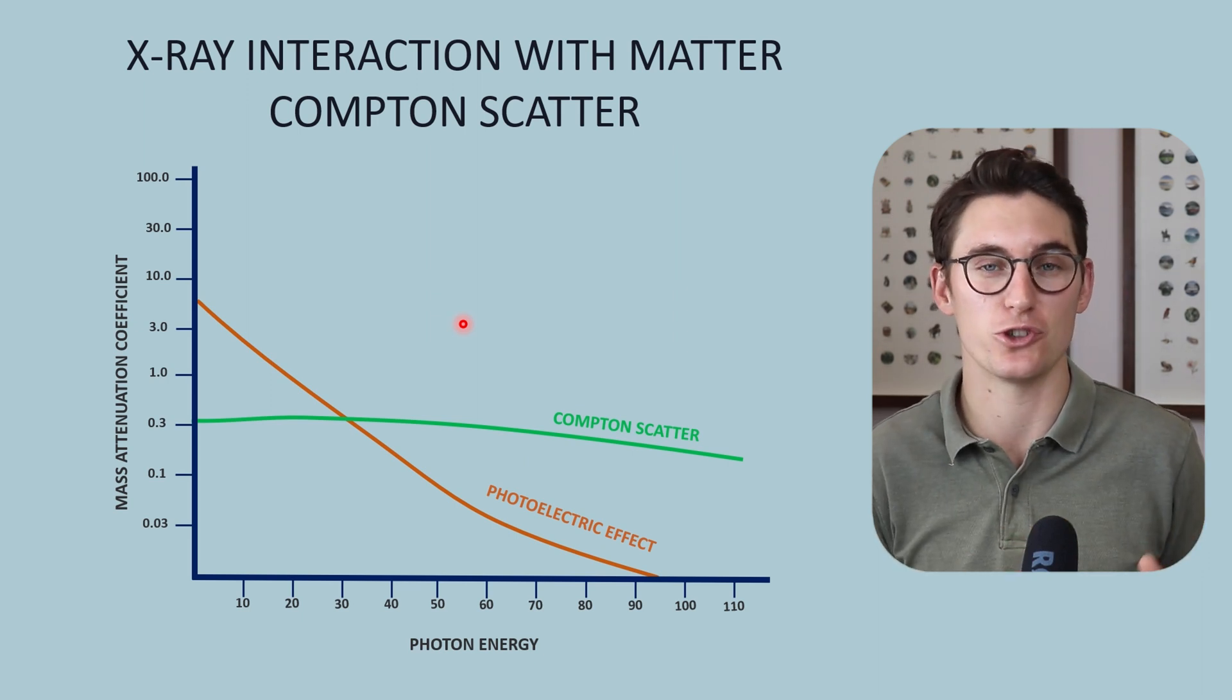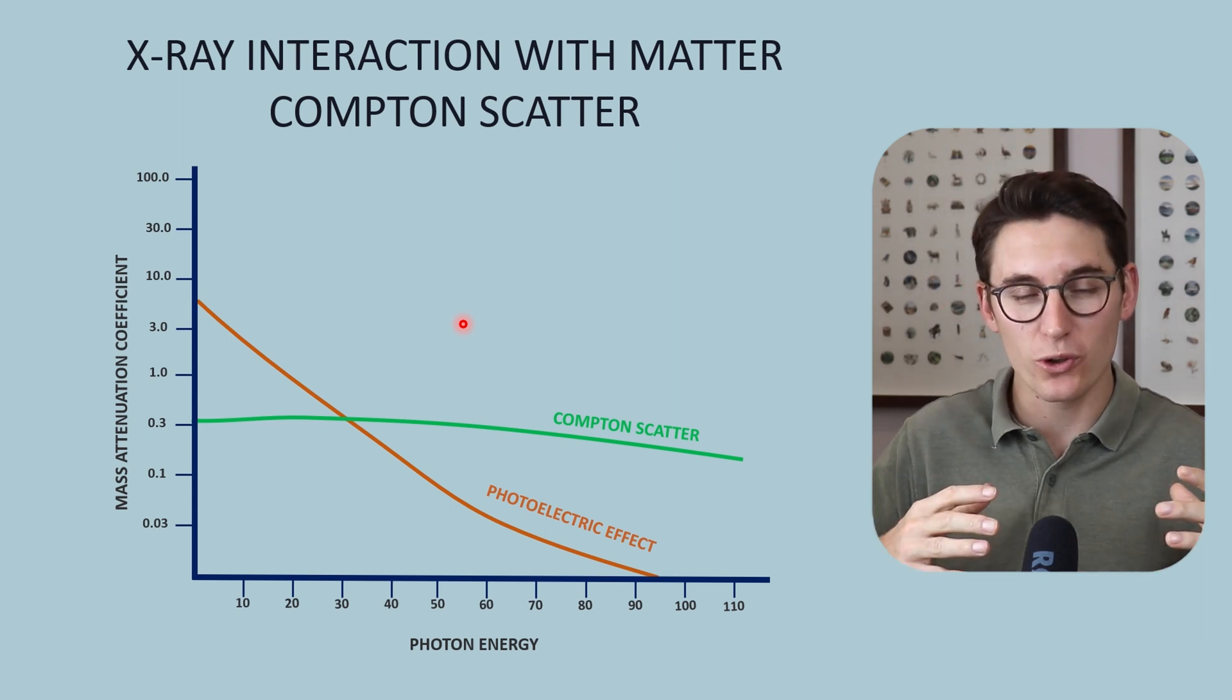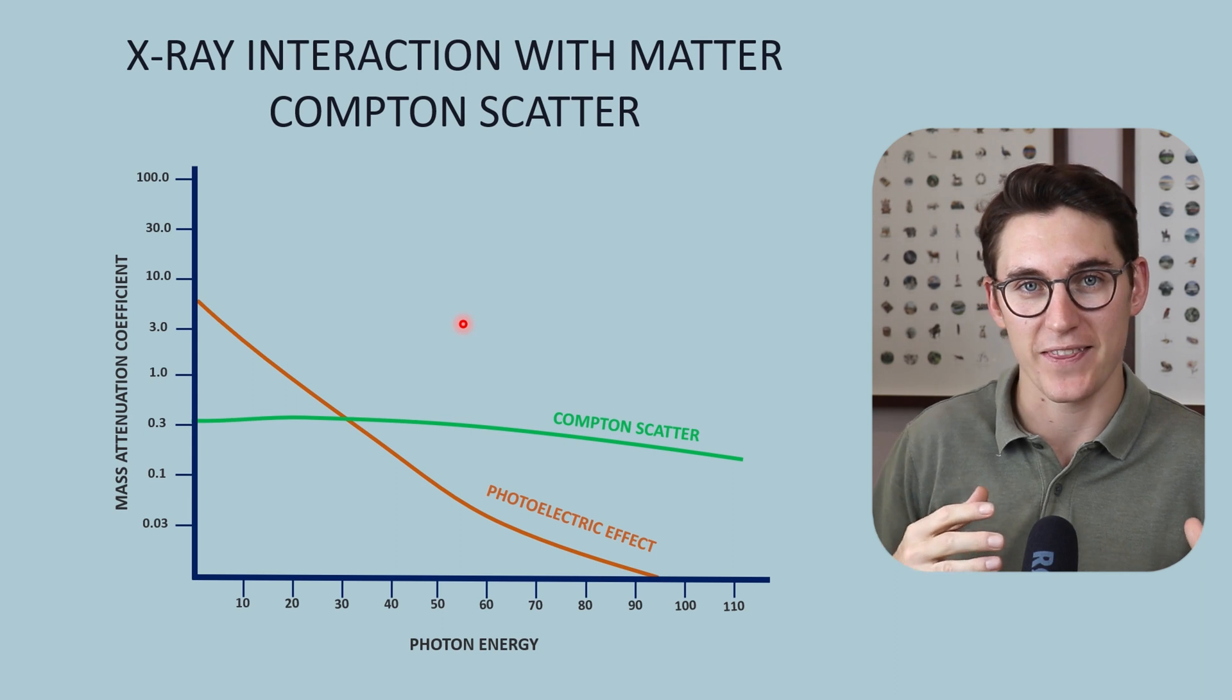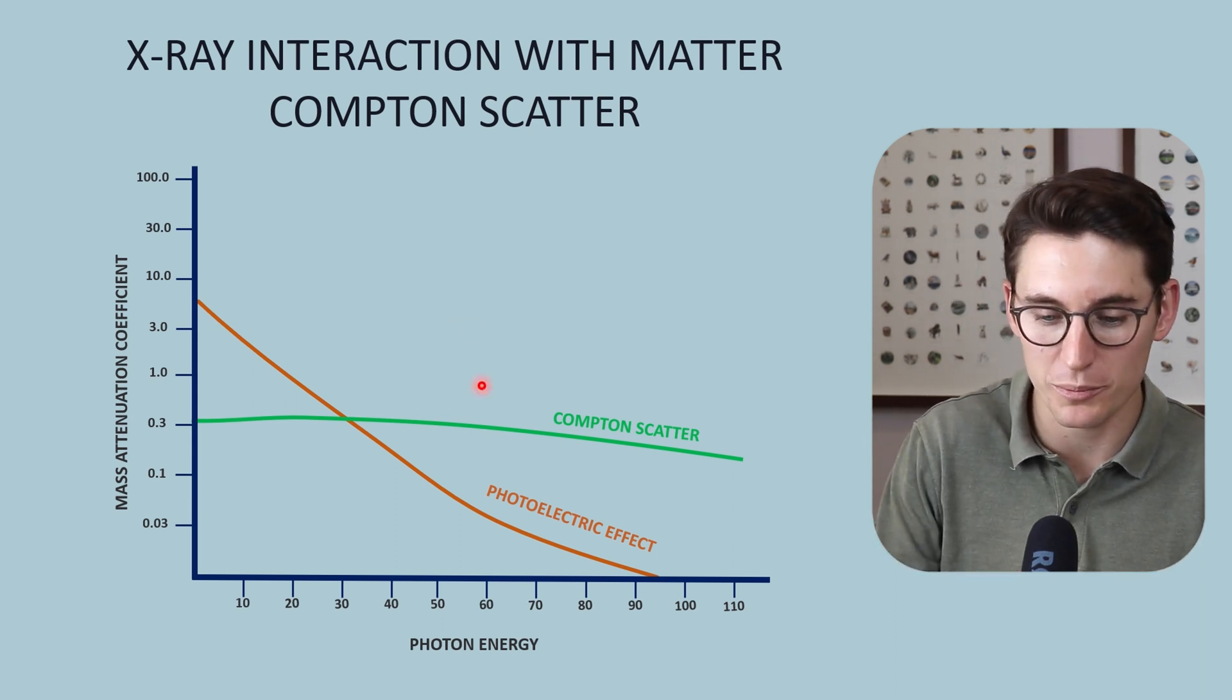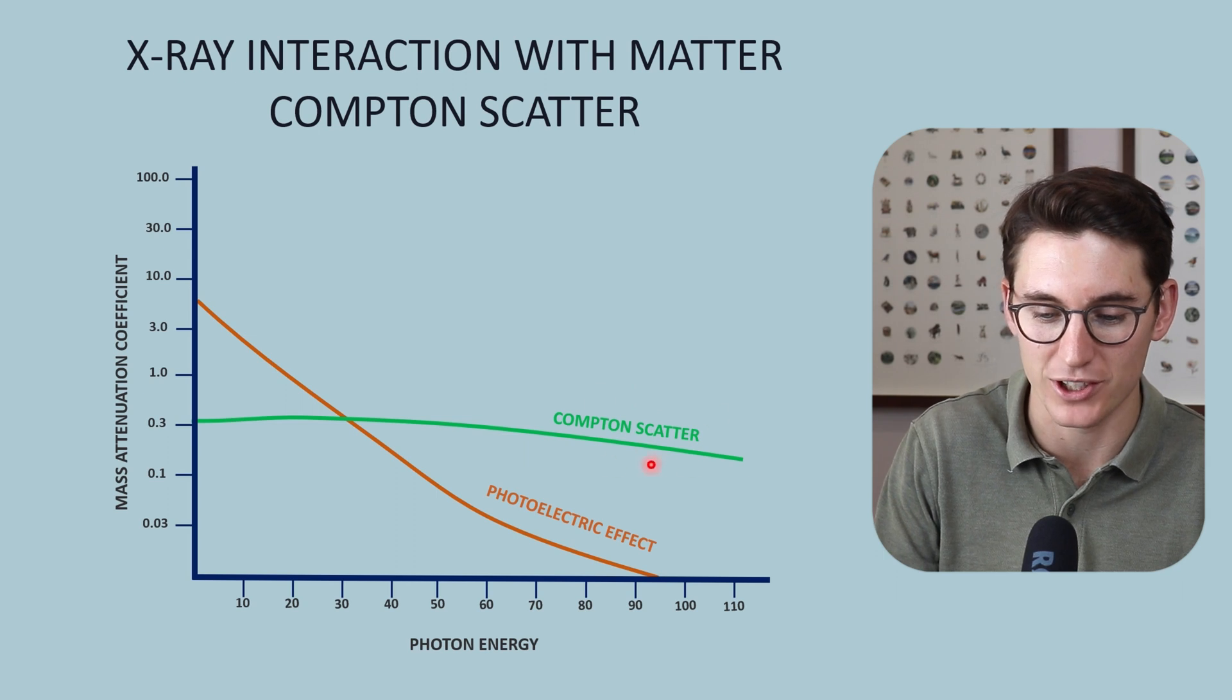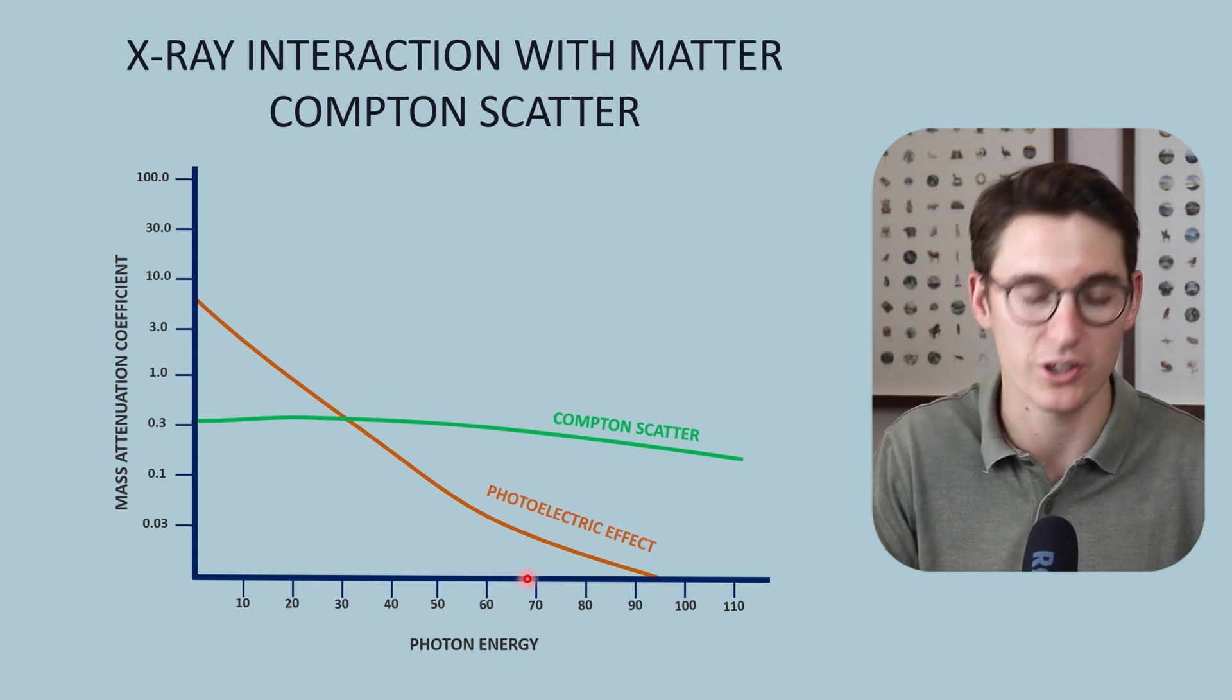Compton scatter's likelihood is largely dependent on the density of the tissue or the electron density. It has very little to do with atomic number because as atomic number increases, so does the number of electrons and that electron density remains roughly equal. Compton scatter is largely dependent on density, with very little dependence on photon energy.